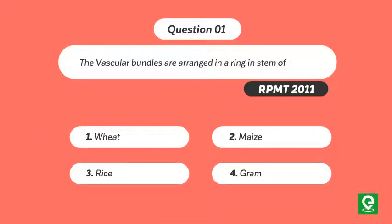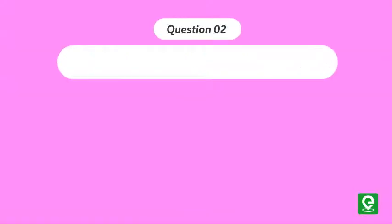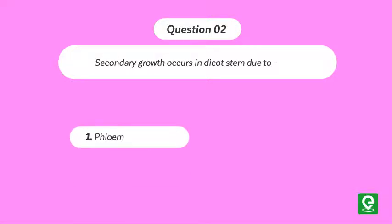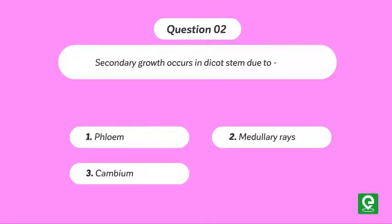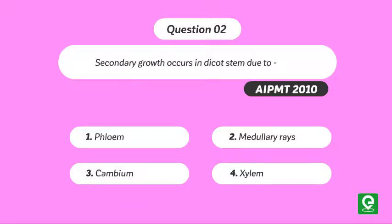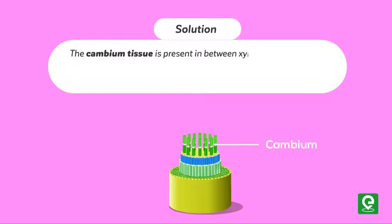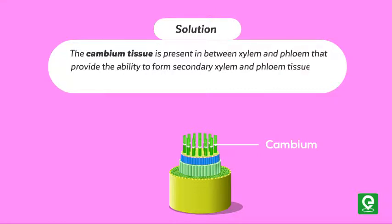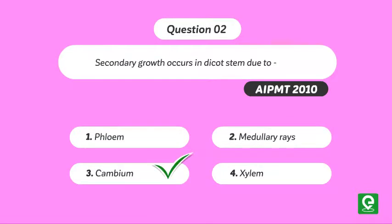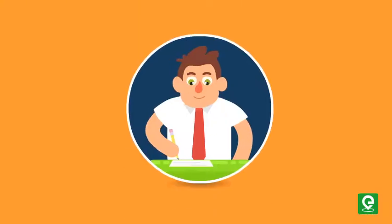Question 2: Secondary growth occurs in dicot stem due to — phloem, medullary rays, cambium, or xylem? This question was asked in AIPMT 2010. Solution: The cambium tissue is present between xylem and phloem, and provides the ability to form secondary xylem and phloem tissues by the process of secondary growth. Hence option 3, cambium, is the correct answer. Students must learn the characteristics of monocot and dicot plants to answer questions related to these.